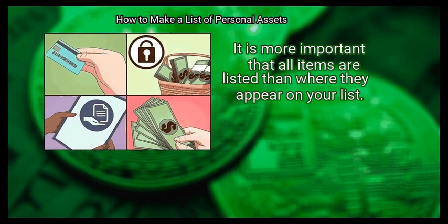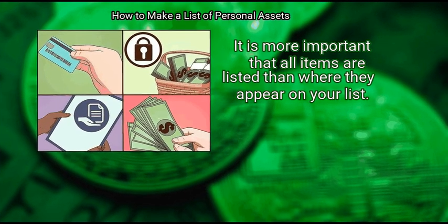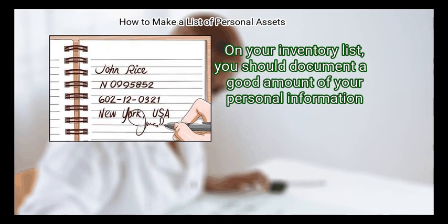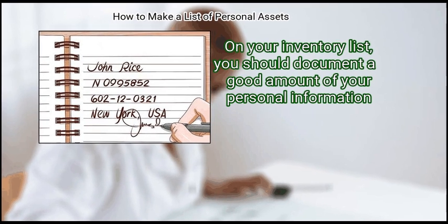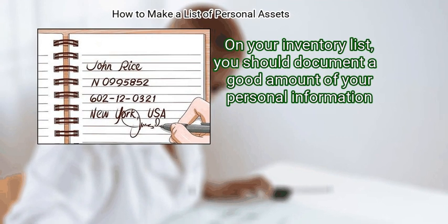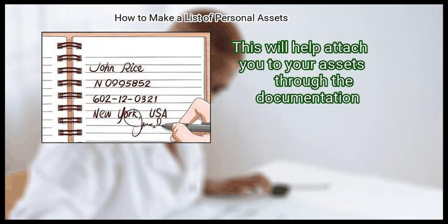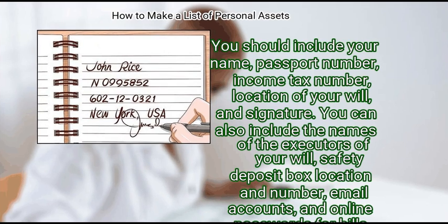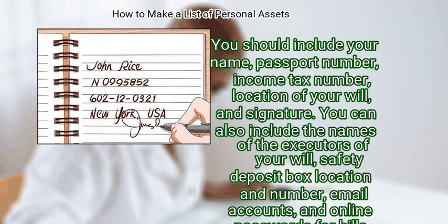It is more important that all items are listed than where they appear on your list. Step 4: Document personal information. On your inventory list, you should document a good amount of your personal information. This will help attach you to your assets through the documentation. You should include your name, passport number, income tax number, location of your will, and signature. You can also include the names of the executors of your will, safety deposit box location and number, email accounts, and online passwords for bills, accounts, and profiles.